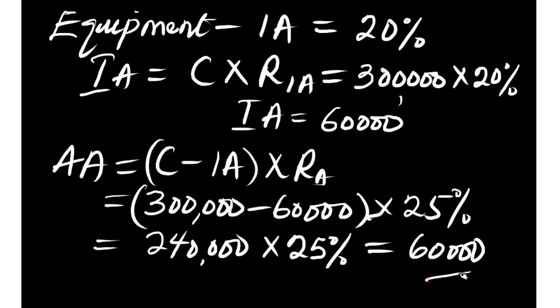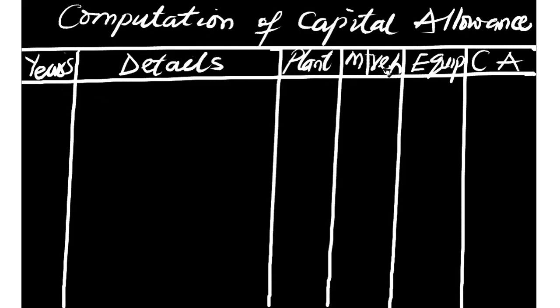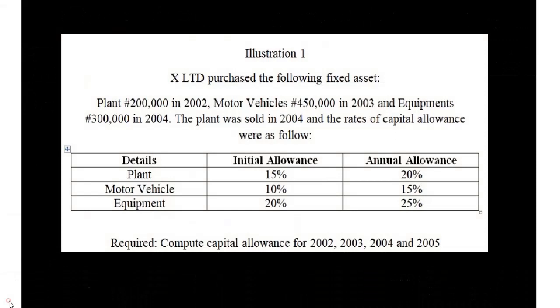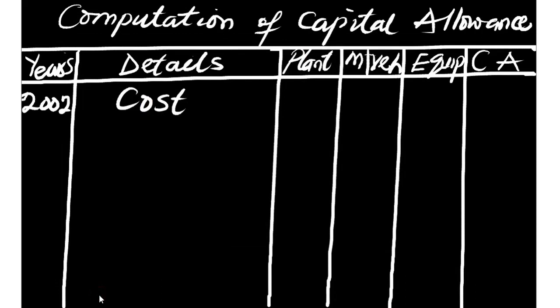We have now finished all the preliminary analysis. We go to the table: Computation of Capital Allowance, with columns for years, details, plant, motor vehicle, equipment, and capital allowance. The question asks us to compute for 2002, 2003, 2004, and 2005. Starting with 2002 — we list the cost of any asset purchased that year. In 2002, we bought plant for 200,000, so we enter 200,000 under the plant column.